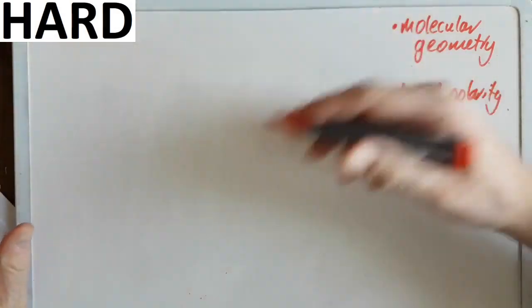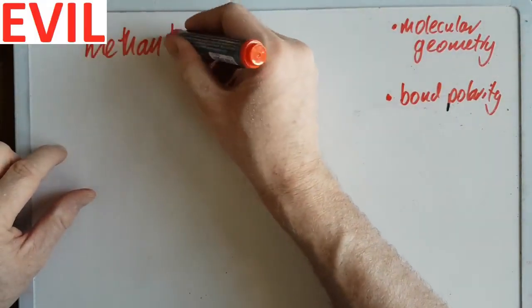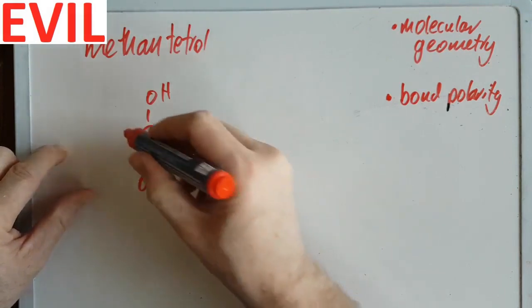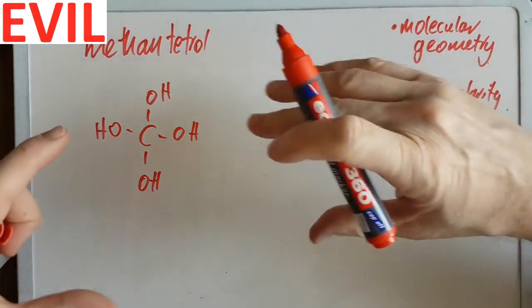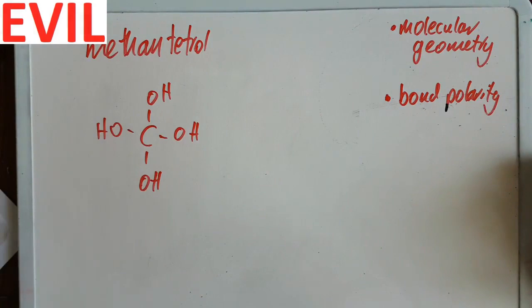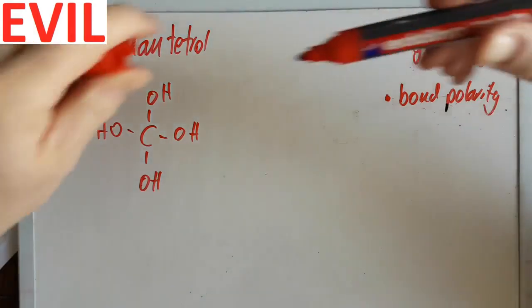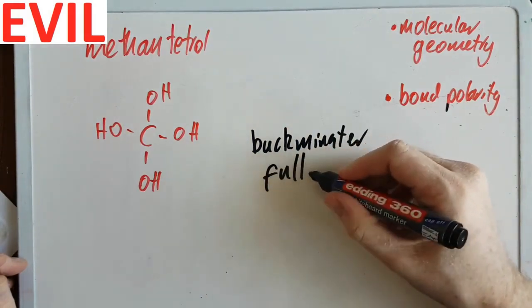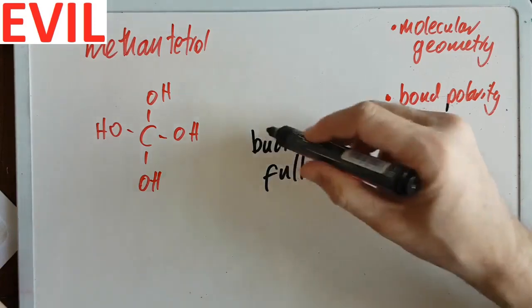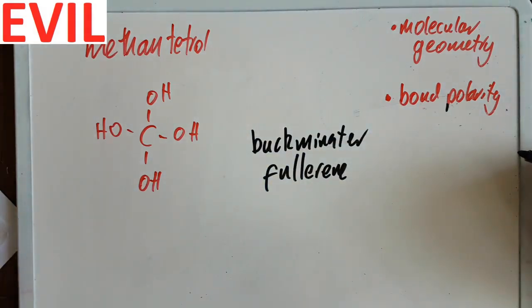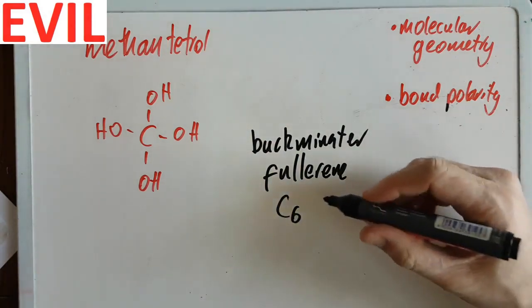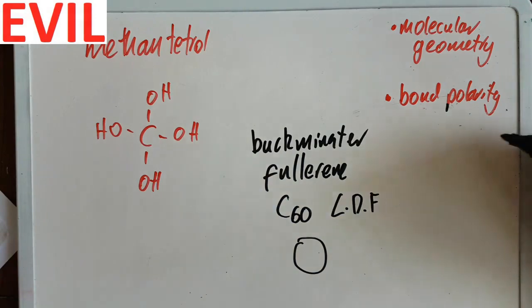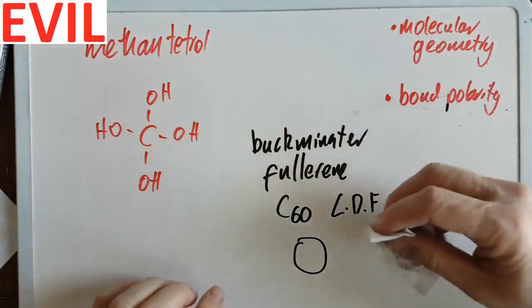Now let's look at some tricky ones. Methantetrol is just carbon with four hydroxyl groups attached. It must have very strong intermolecular forces — hydrogen bonds — with at least four sites for hydrogen bonding, so I'd expect it to be a viscous liquid or jelly-like solid with a high melting/boiling point. Then there's buckminsterfullerene, C60, the large sphere made of pentagons and hexagons. That has only London dispersion forces. The IB have asked about that one before, so you need to know it.